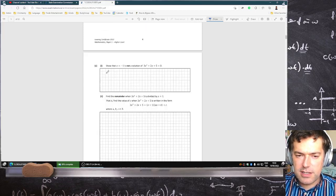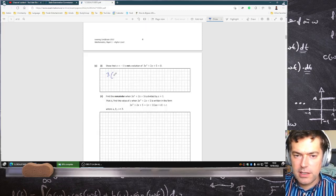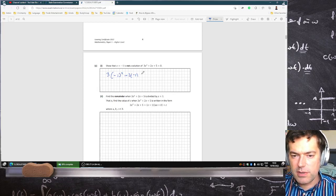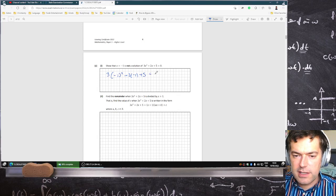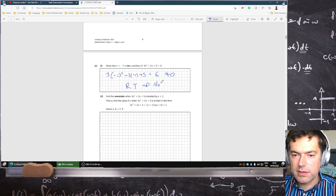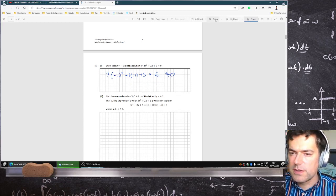Show that minus 1 is not a solution. Okay, 3 times minus 1 squared plus 2 times minus 1 plus 5. That's going to be equal to 3 minus 2 plus 5 is 6, which is not zero. So by the remainder theorem, that means it's not a root. Oh, we're not even caring if it's a root, is it a solution? Okay, it's not a solution then. 3 minus 2 is 1 plus 5 is 6.